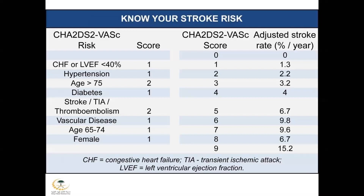The important thing about CHA₂DS₂-VASc is how you talk to patients about stroke risk. If the patient scores zero, they have zero risk of stroke. The maximum risk of stroke is 15% when the patient scores nine. This is very important because this is how you will convince patients that they might need ablation surgery, medical therapy, or surgical ablation.